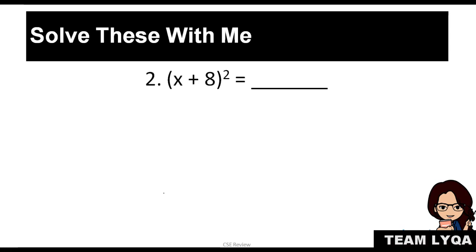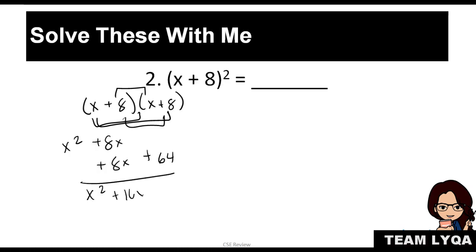Now, what if it's positive? (x + 8). (x + 8)². So, again, if we do it the long way, (x + 8) times (x + 8), you have first x². And then the inside, which is +8x, outside +8x, inside. And then you have +64. So the answer is x² + 16x + 64.